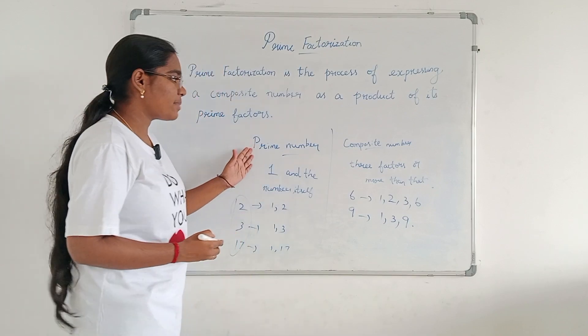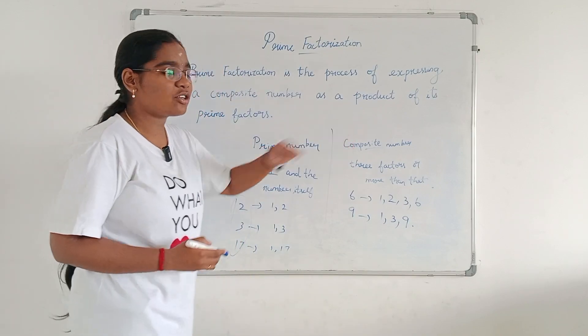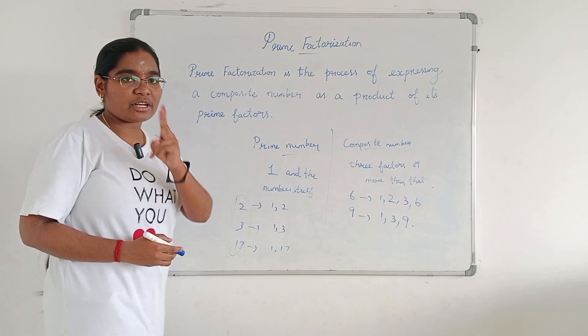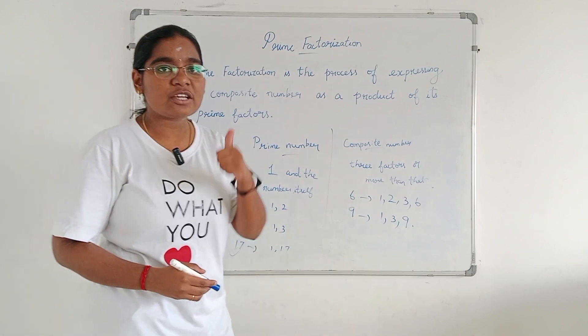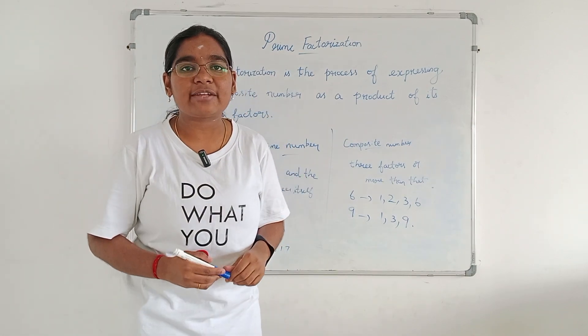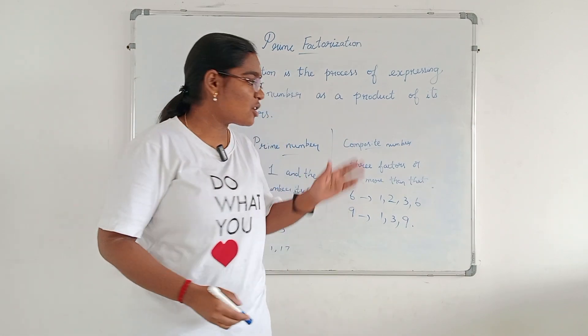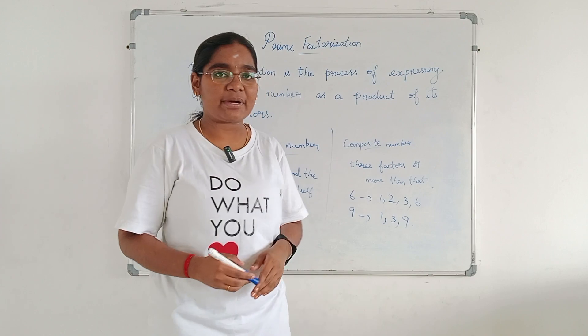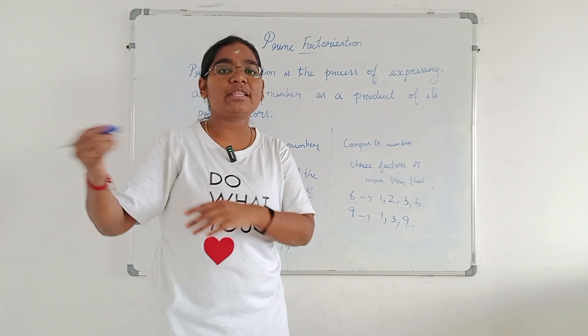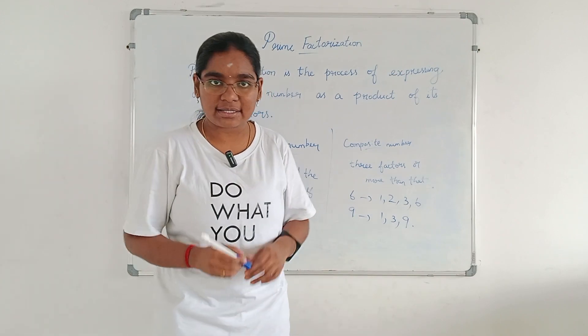So, a prime number has only two factors — one and the number itself — whereas a composite number has three or more than three factors.